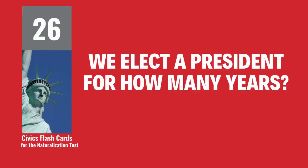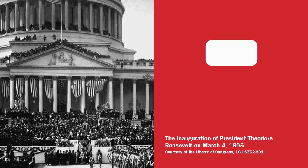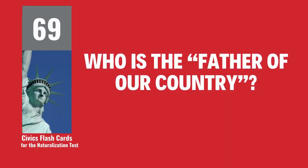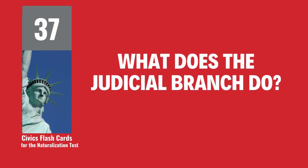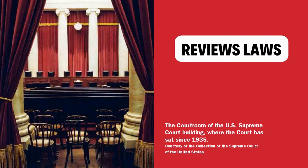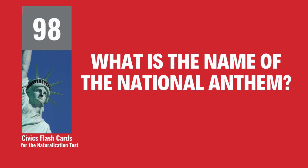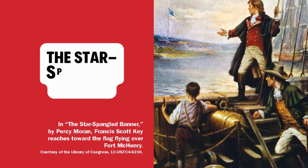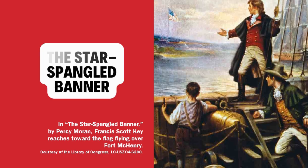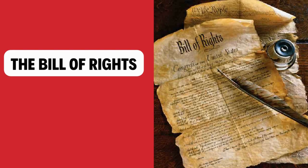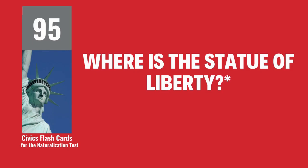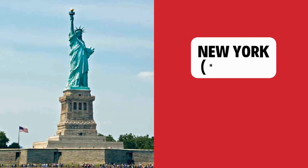We elect a president for how many years? 4. Who is the father of our country? George Washington. What does the judicial branch do? Reviews laws. What is the name of the national anthem? The Star-Spangled Banner. What do we call the first ten amendments to the Constitution? The Bill of Rights. Where is the Statue of Liberty? New York Harbor.